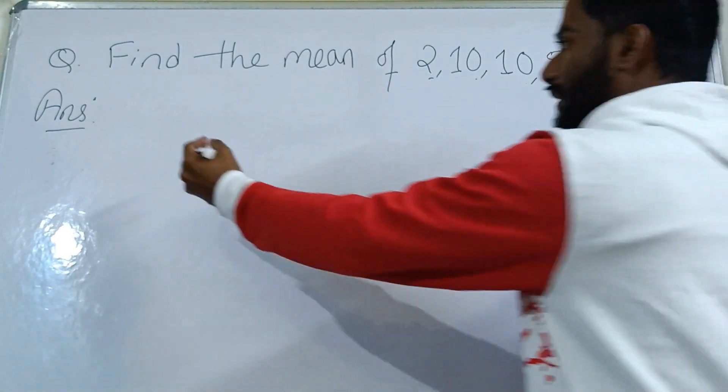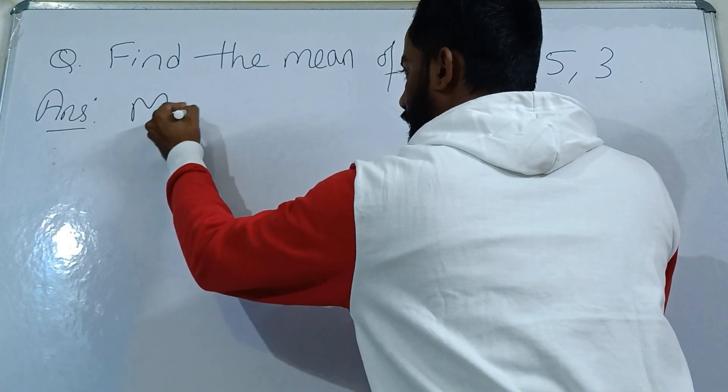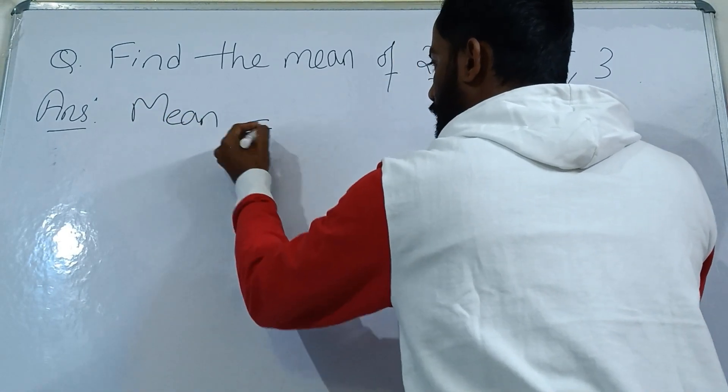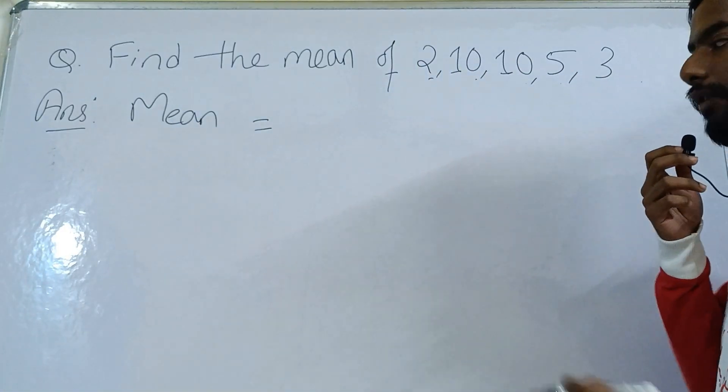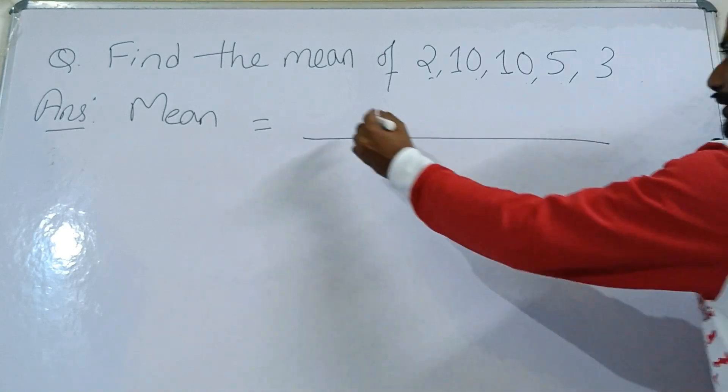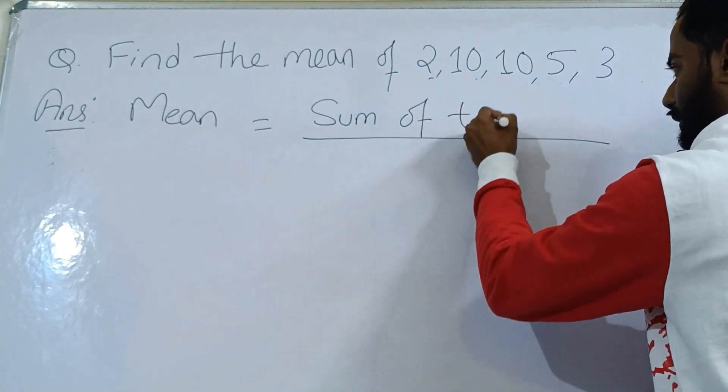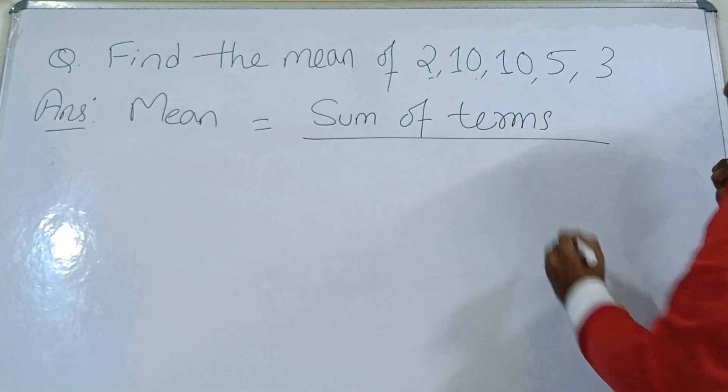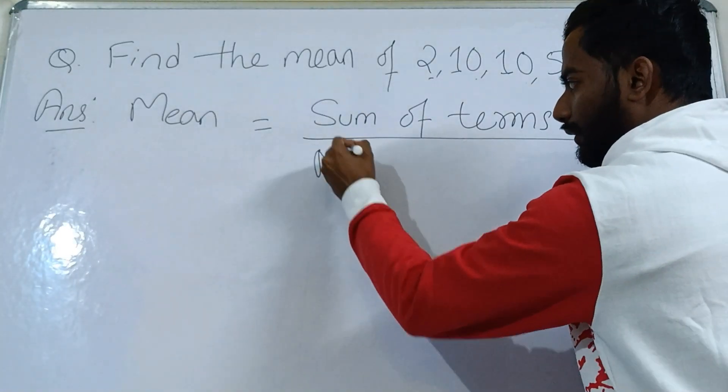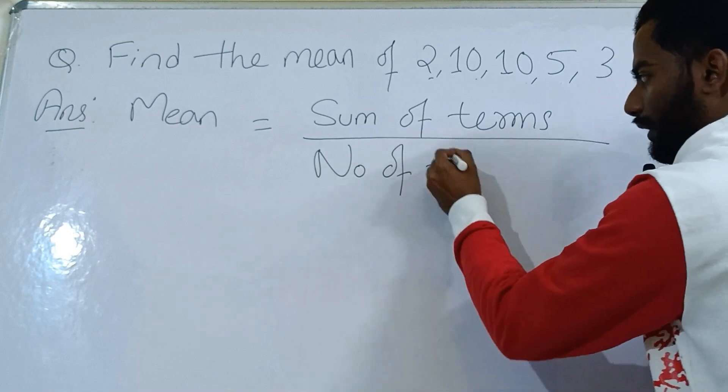We'll write mean equals to - what is mean? Mean is sum of terms divided by number of terms.